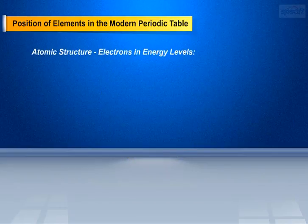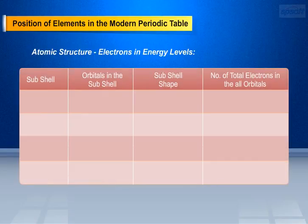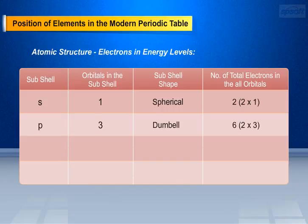Let us see the general atomic structure of electrons of an atom in energy levels. Here S, P, D, F are subshells to K, L, M, and N shells. The subshell S, which is spherical in shape, has 1 orbital and contains a maximum of 2 electrons. The subshell P, which is dumbbell in shape, has 3 orbitals and contains a maximum of 6 electrons. The subshell D, which is X-shaped, has 5 orbitals and contains a maximum of 10 electrons.